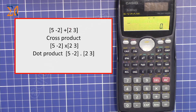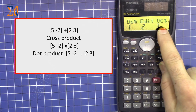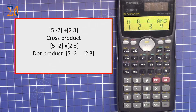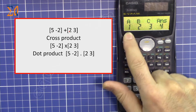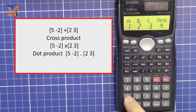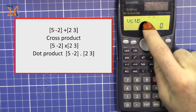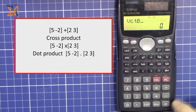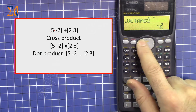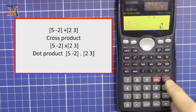Now let's do vector addition — adding vector A and vector B. Order doesn't matter for addition. Press SHIFT 5, then 3 to recall a vector, then select vector B by pressing 2. You can view vector B on screen by pressing SHIFT, then VCT, then equals — you'll see [5, -2].